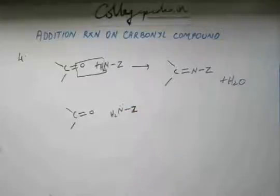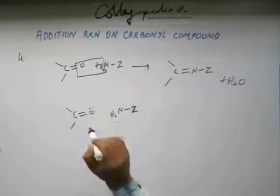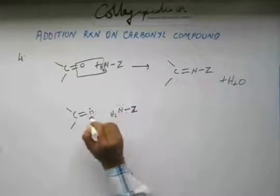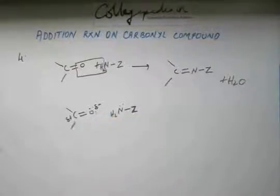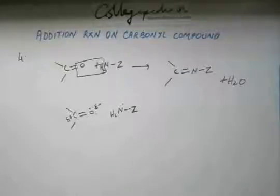This is Nitrogen, it has lone pair. This is Oxygen, it also has lone pair. These two are not going to approach each other. This has delta negative charge, this has delta positive charge. Now who is going to approach whom?